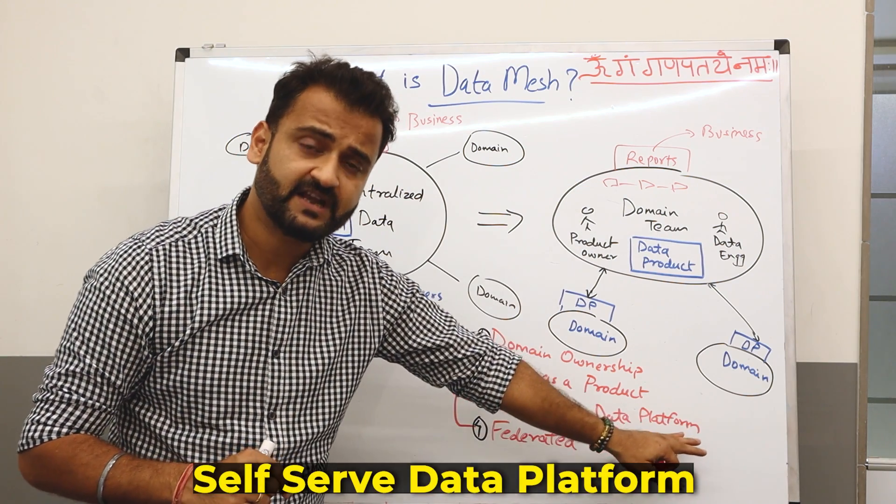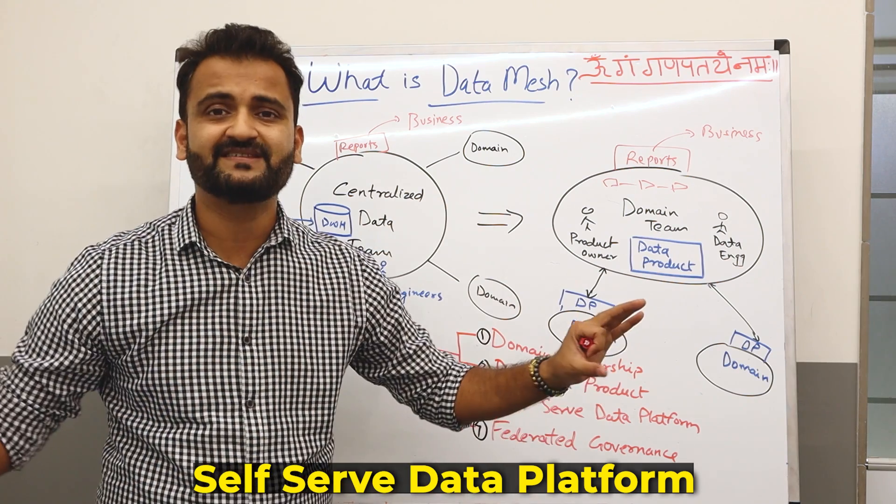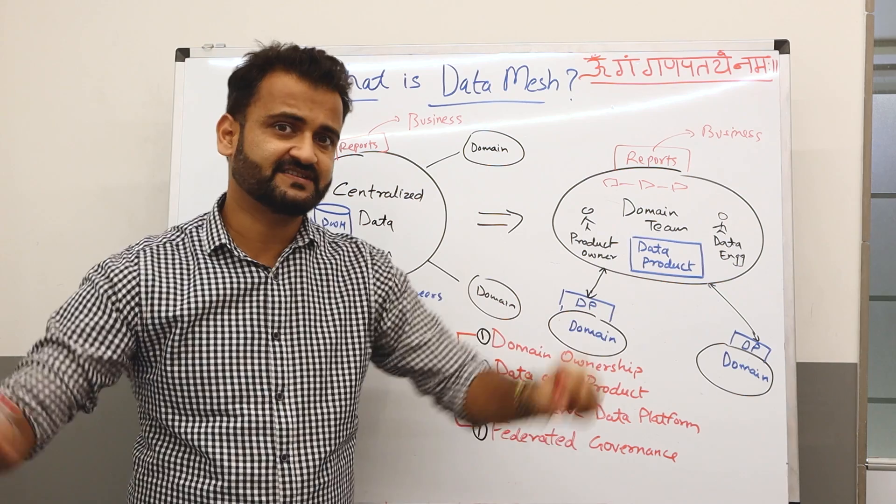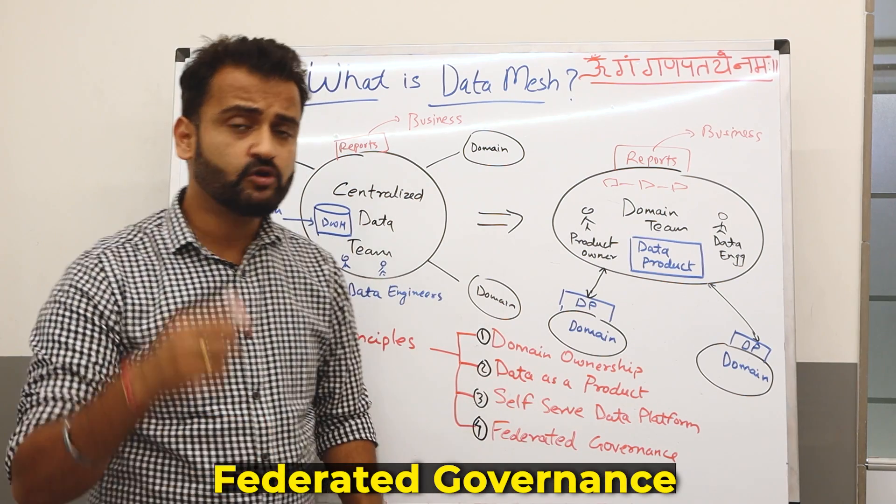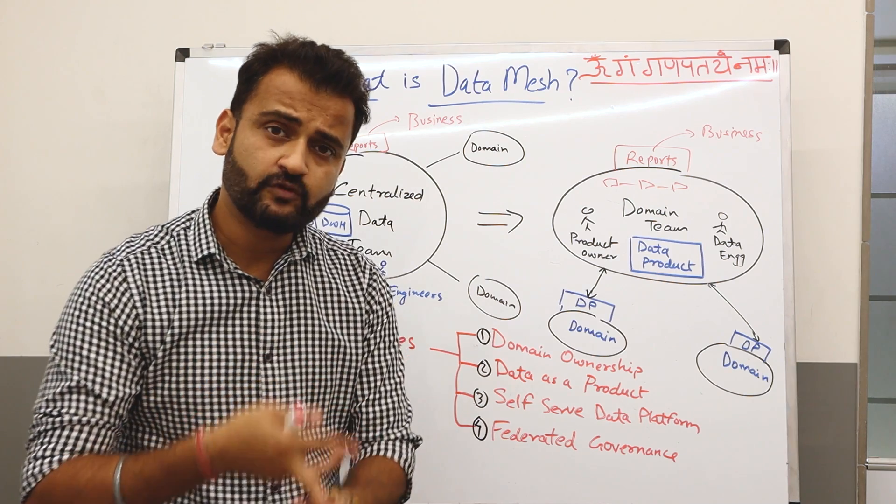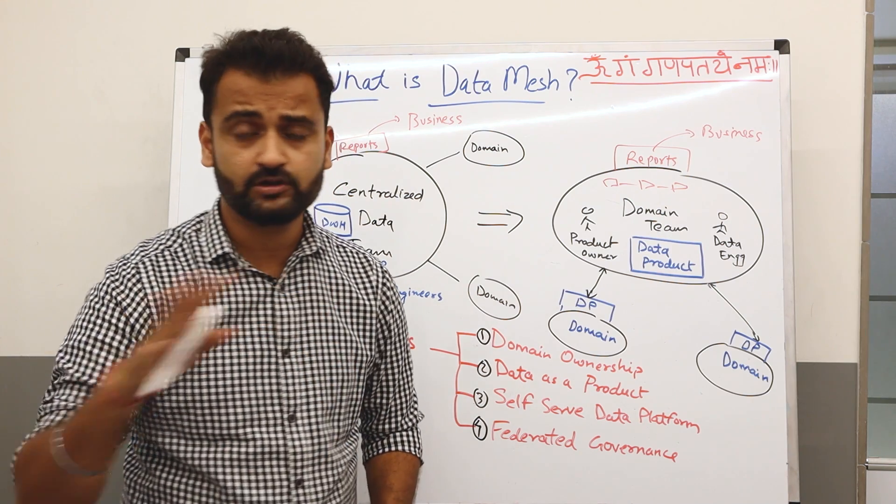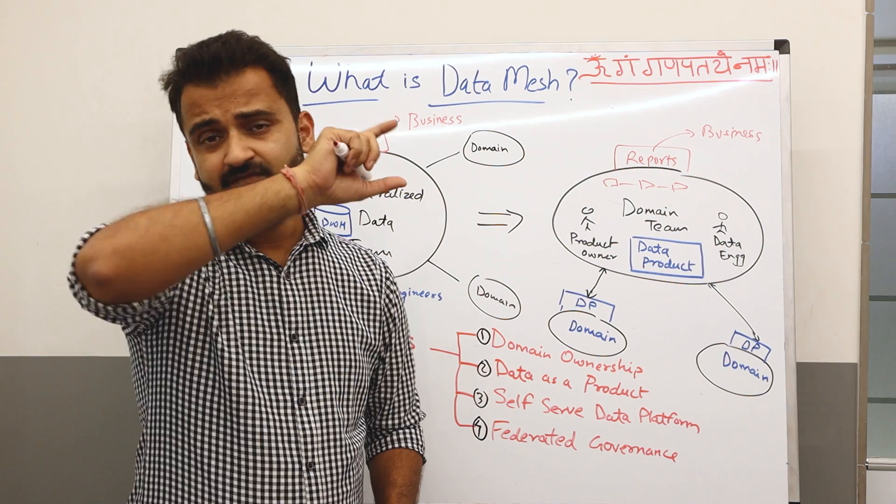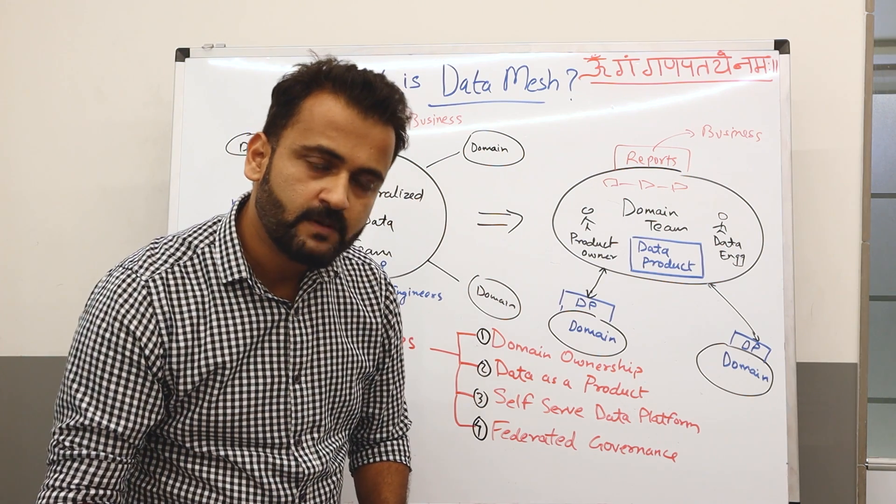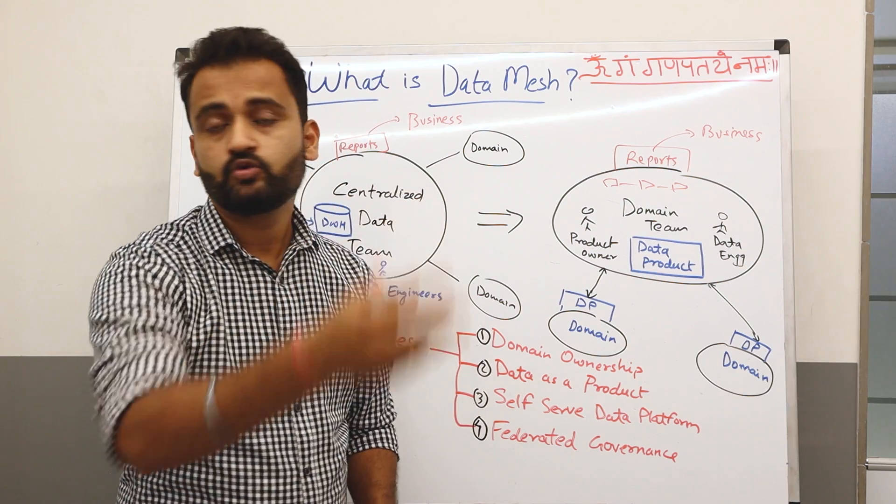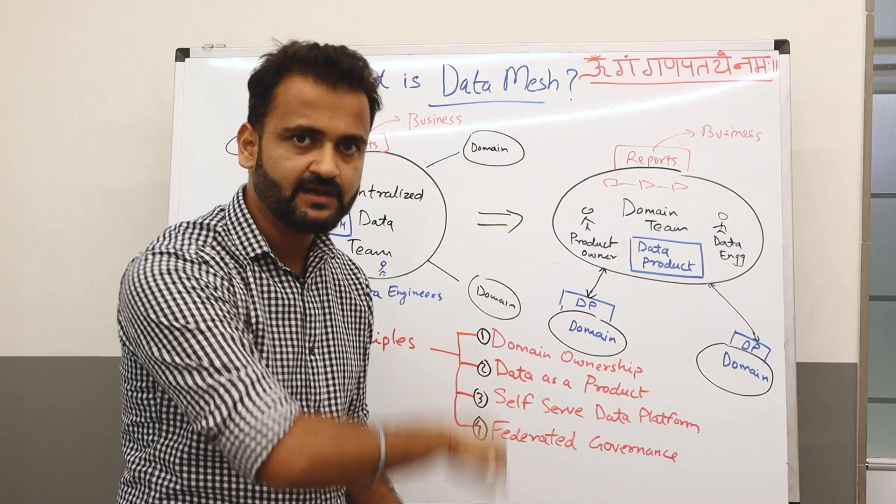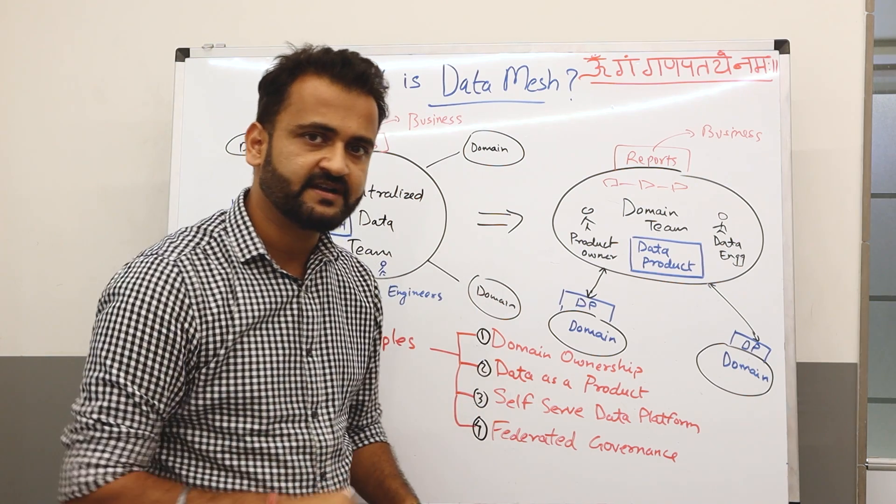You will have your self-serve data platform. Obviously these domains need a basic infrastructure, and for that there will be a team which will provide that infrastructure platform. And then federated governance. Because with data you have to look for compliance, you have to look for security, you have to look for data integrity and all those things. And for that there will be a federated governance which will sit across all these different domains. And there will be global policies applicable to all domains, and then there could be some local policies applicable to specific domains. Again, we will see that in the architecture diagram.